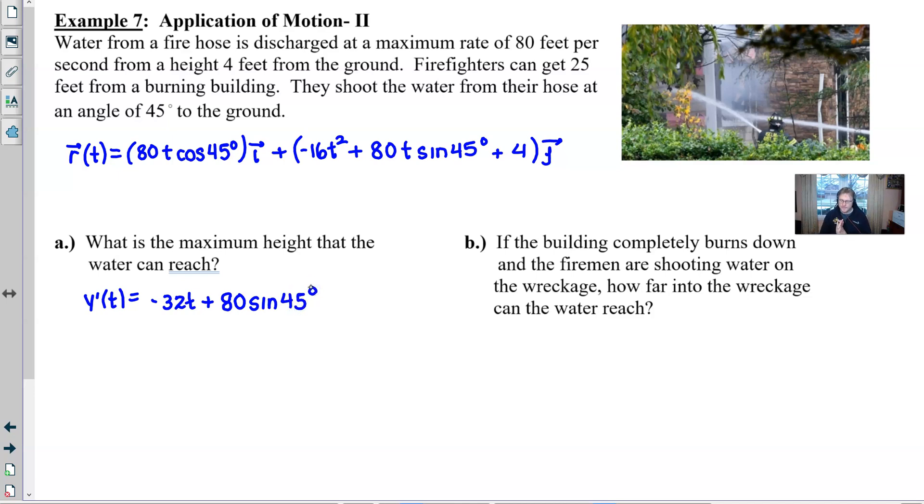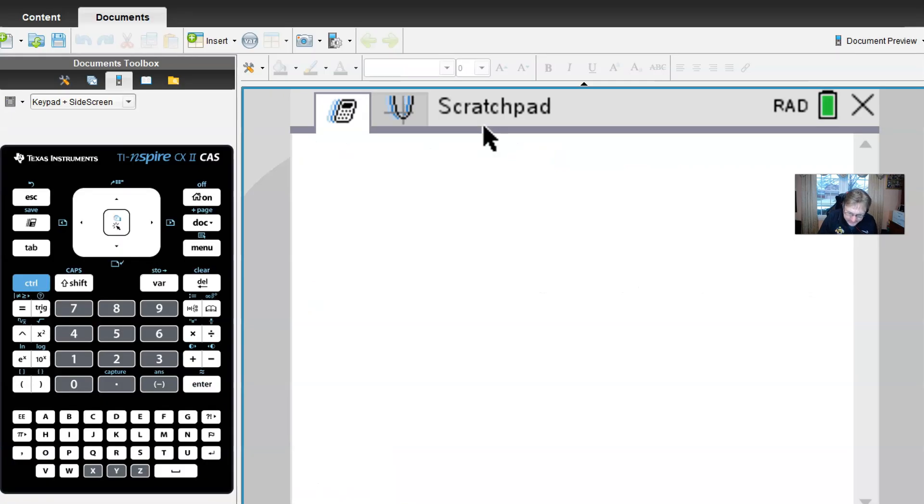Now we know that we can set this derivative equal to zero to find the critical values for it, as we always did with functions from AB calculus. And if this is set equal to zero, hopefully you can see that you would subtract the 80 sine 45 degrees over, divide by the negative 32, and you will have a pair of negatives that will cancel away. So you're essentially dealing with 80 times the sine of 45 degrees, all divided by 32.